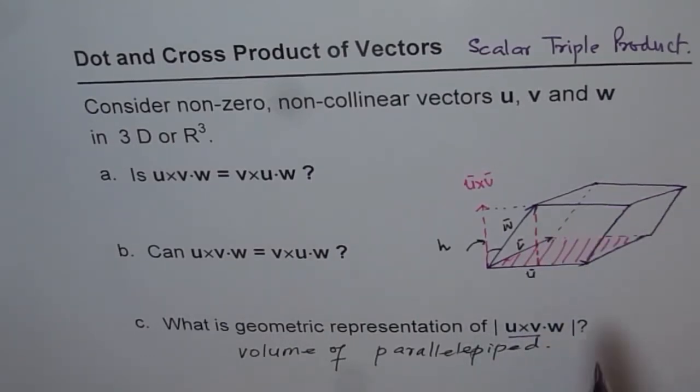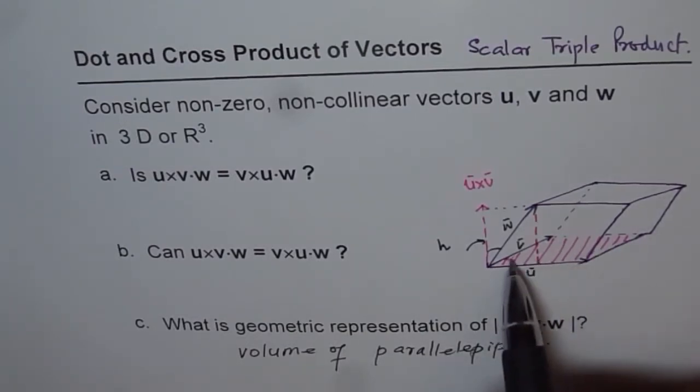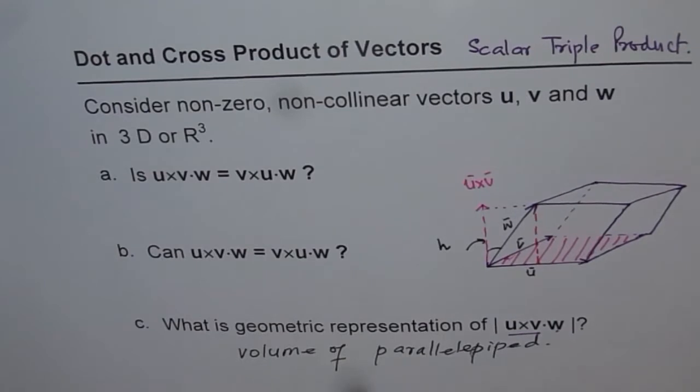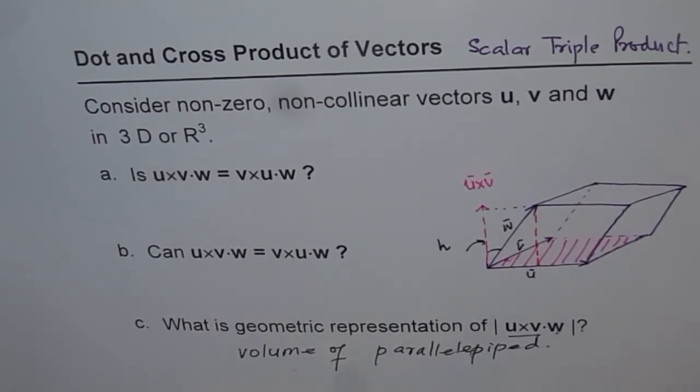That scalar triple product, magnitude, gives you the volume of this parallelopiped. And I hope you understand how. Now, u cross v gives me the area of the base and when I dot it with w, then it gives me the height. And so base times height is the volume of parallelopiped. That is what it is. So I hope now it is absolutely clear. And let me know if it is not.